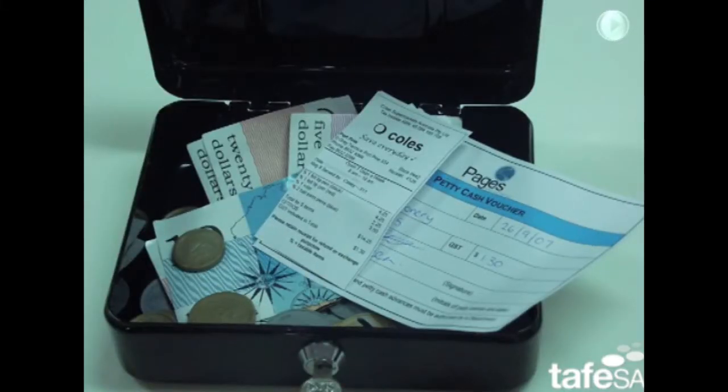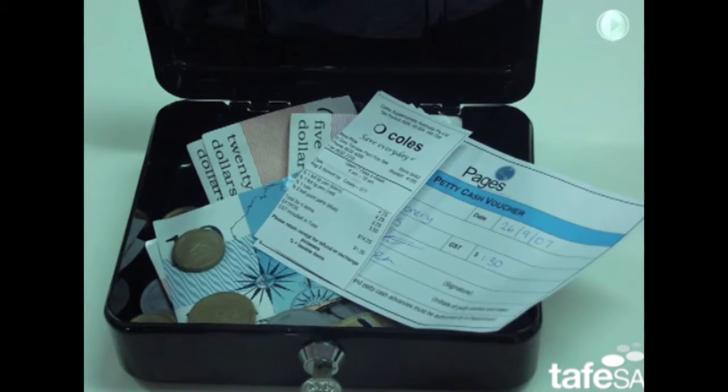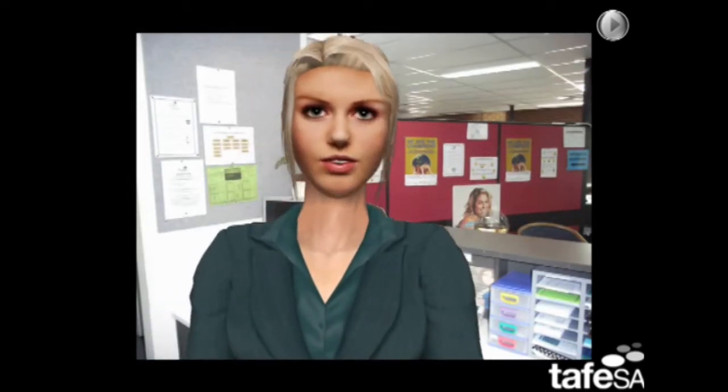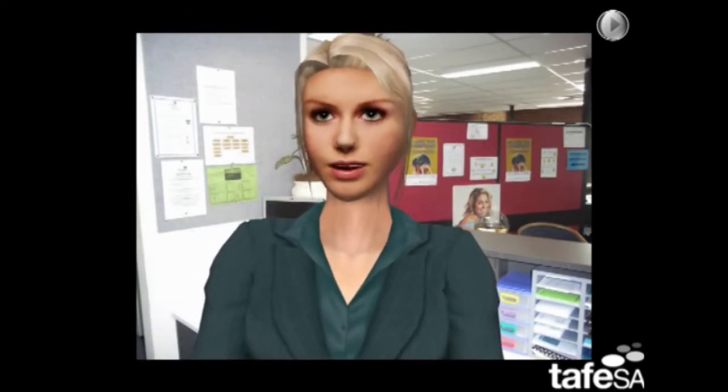Then Kathleen staples the receipt to the petty cash voucher and places it back into the tin. The cash and the vouchers in the tin should always add up to the original amount. You need to keep an eye on the petty cash tin to make sure you will always have enough money to cover the claims that come in.